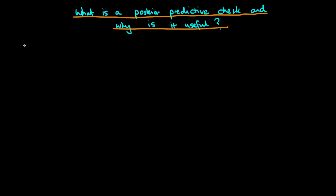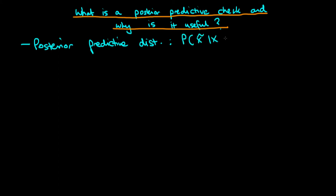A posterior predictive check relies on us being able to approximate the posterior predictive distribution. Whilst there is an equation which would allow you to exactly calculate the posterior predictive distribution, in most practical circumstances this calculation is just too difficult to undertake. The posterior predictive distribution is the probability distribution over a new data sample x-tilde given that we've observed a current data sample x.